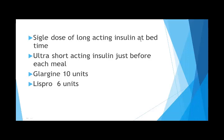Fasting sugar is a function of glargine. If fasting sugar is high, we increase the glargine dose by 2 units that night and continue until fasting sugar reaches approximately 120 mg/dL. Postprandial glucose — after breakfast, lunch, or dinner — is a function of lispro. We check the postprandial level and the next day increase the lispro dose of that particular injection by 2 units, continuing until it reaches the 140–150 mg/dL range.